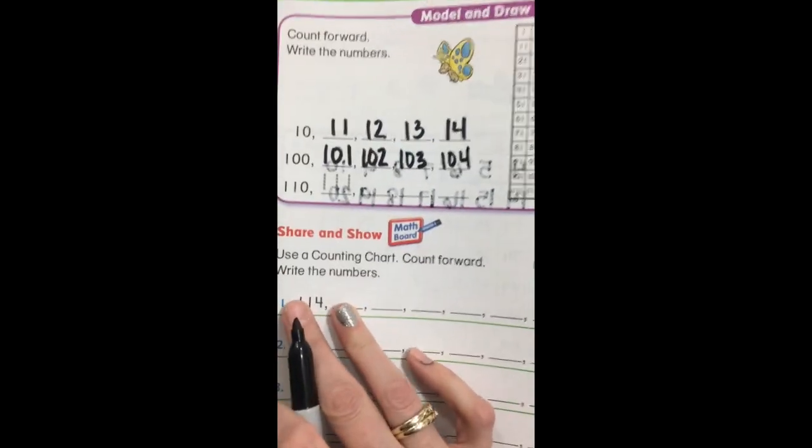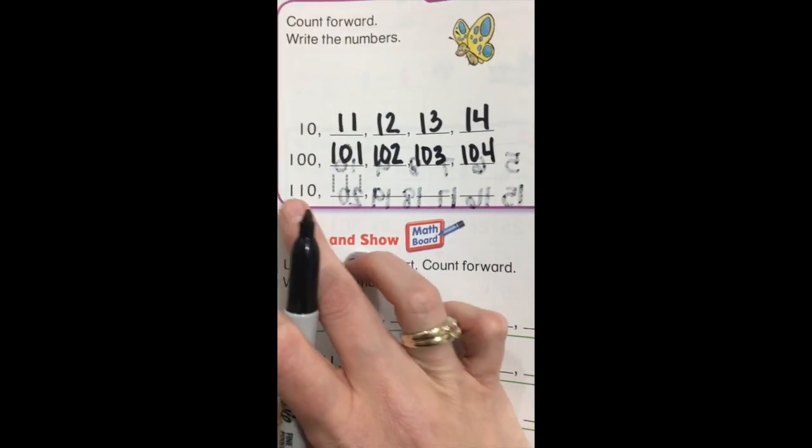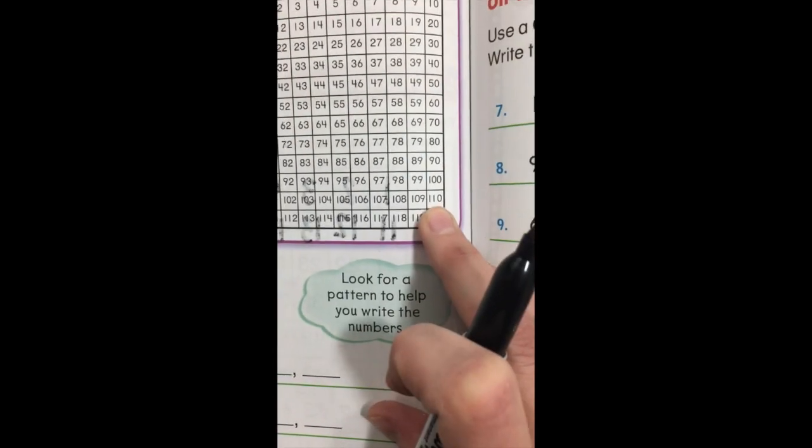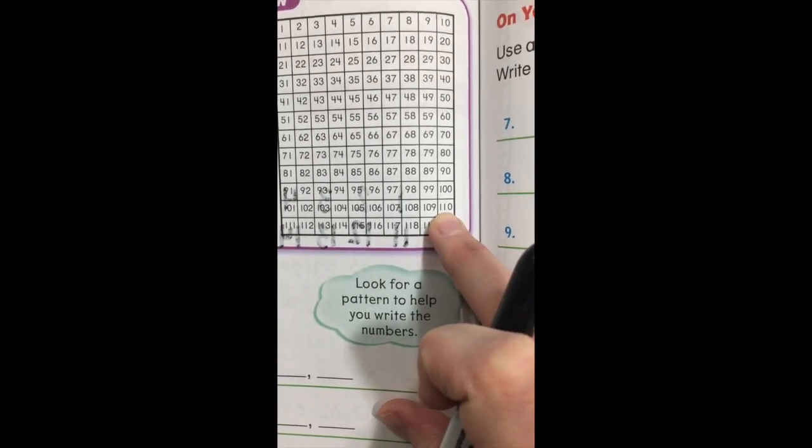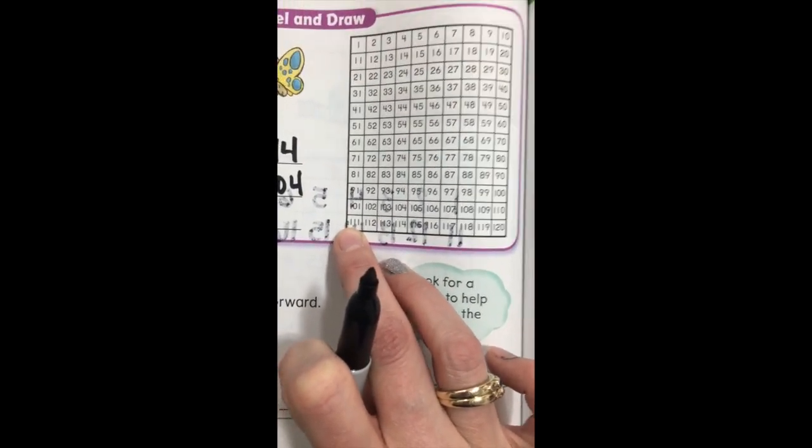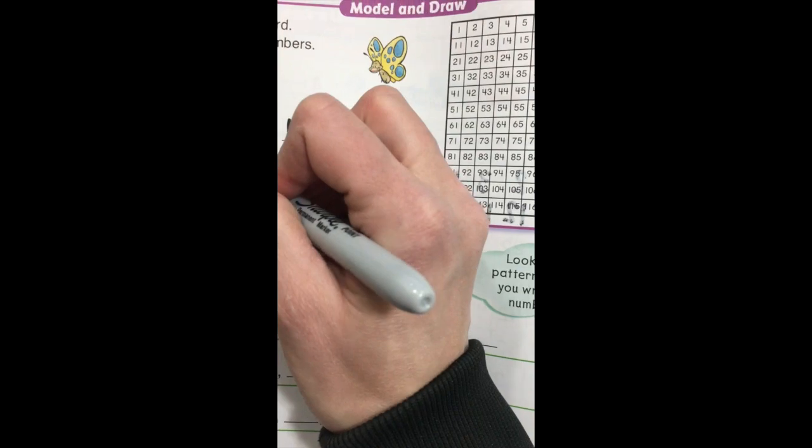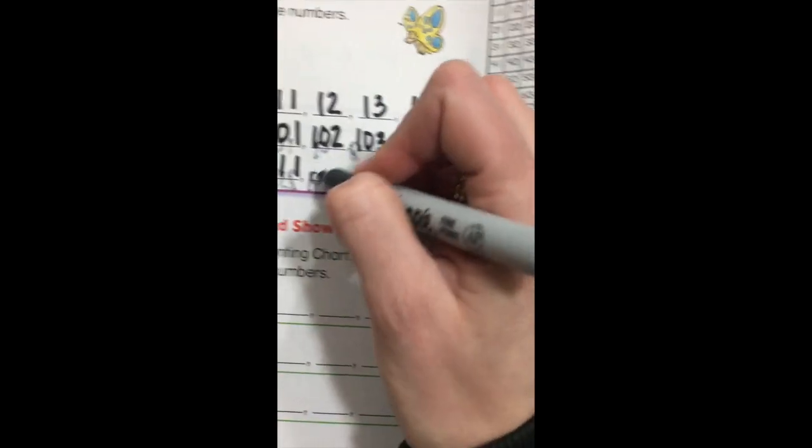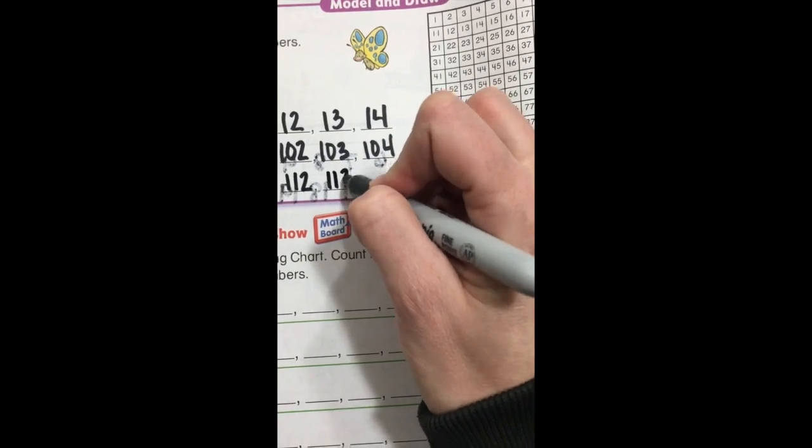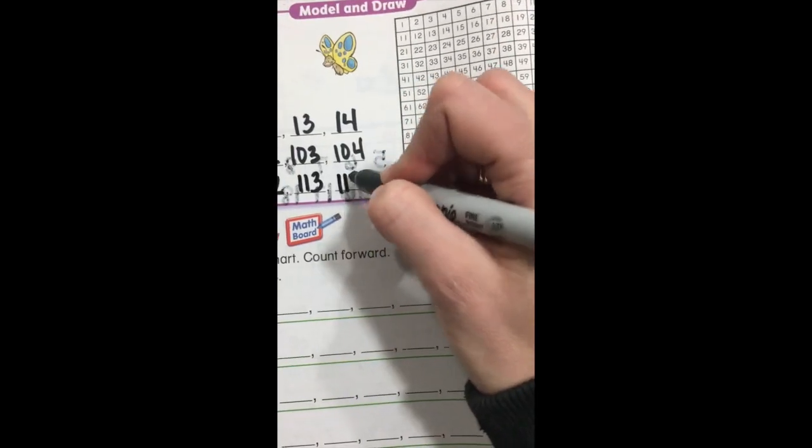104. Oh my goodness, they keep getting harder on us. All right, now they popped up to 110. So if you don't know all the way that far yet, and that's all right, you can come over here and look at our handy dandy chart, and you start at 110, and then you pop down here to the next row. 111. They did that for you. 111, and then 112, 113, 114.